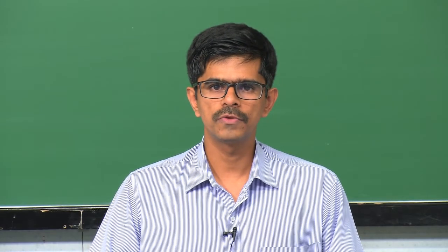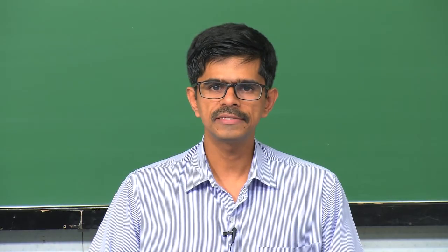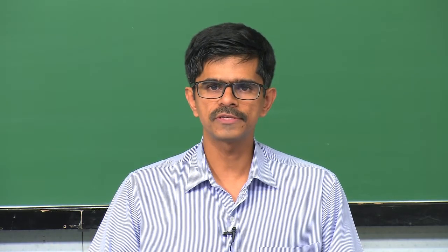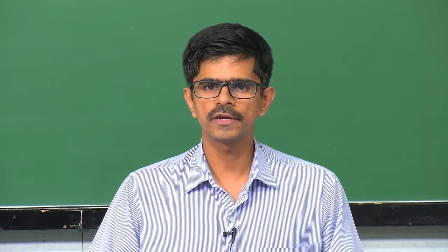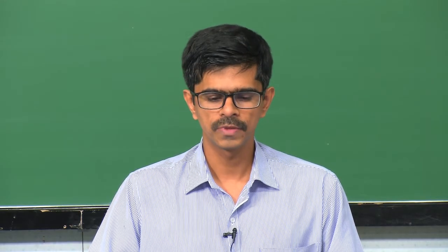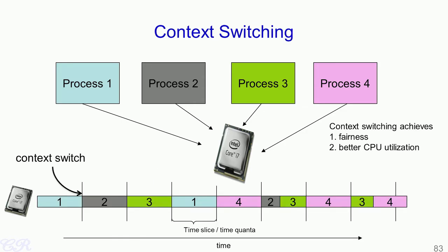In this video we will look at CPU context switching. We will see how the operating system enables multiple processes to share a single CPU. The operating system, by a feature known as multitasking, enables the CPU to be fairly shared among the various processes.